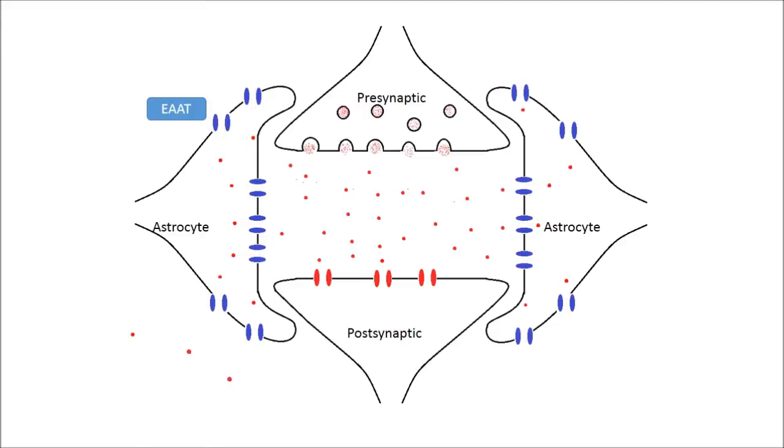Astrocytes take up glutamate using various types of excitatory amino acid transporters, which localize near areas of synaptic transmission and are shown here in blue and abbreviated EAAT. They do this for a variety of reasons.